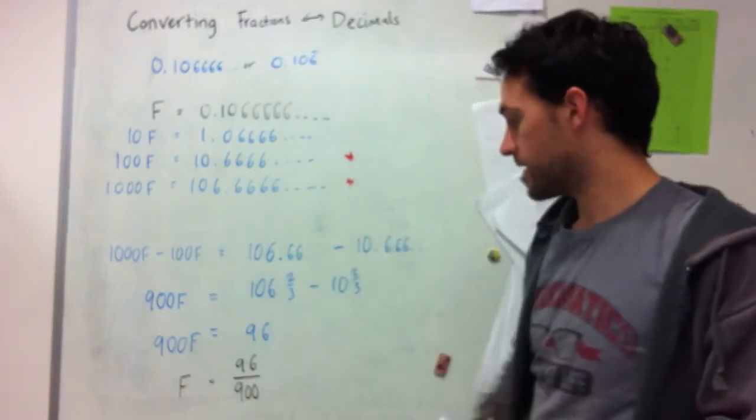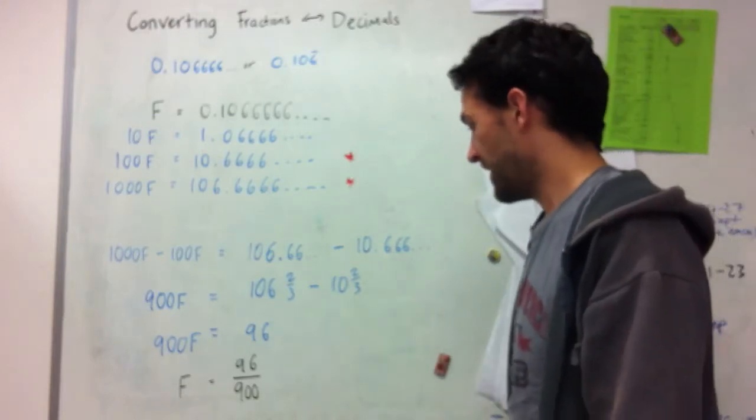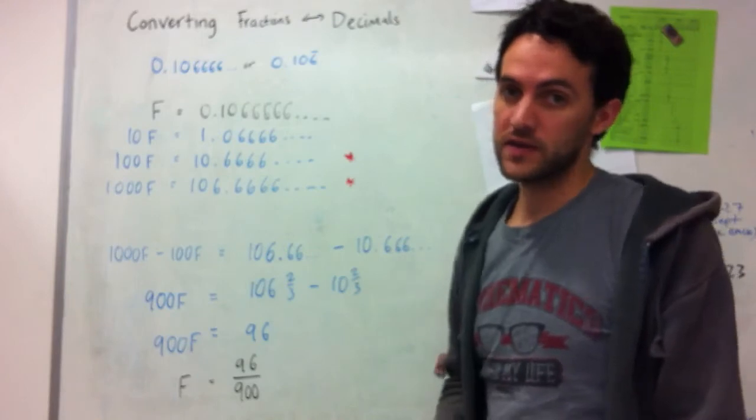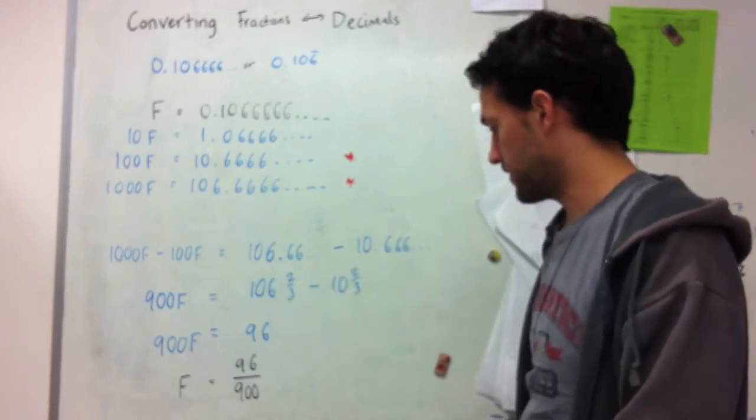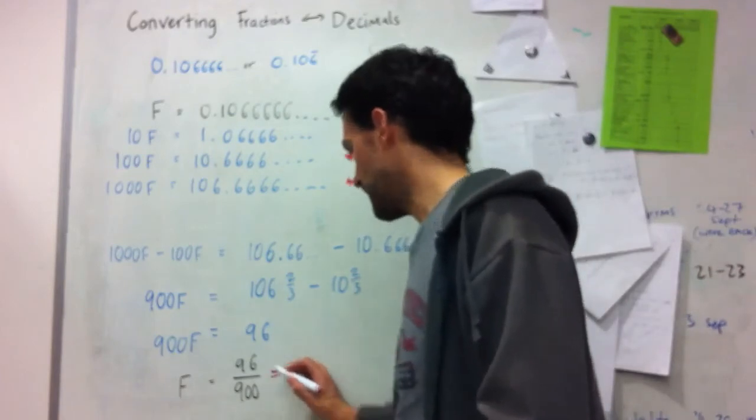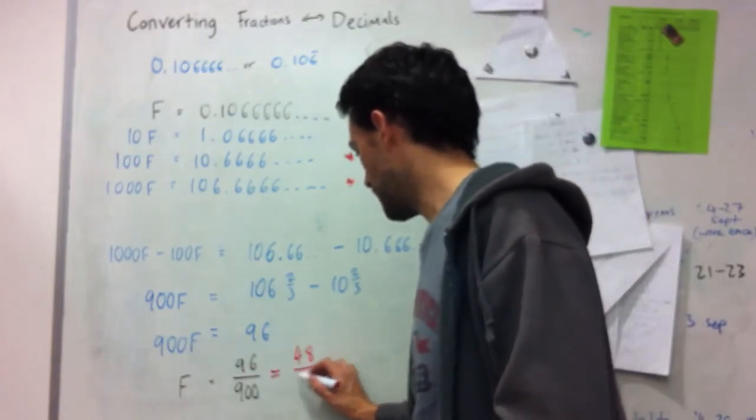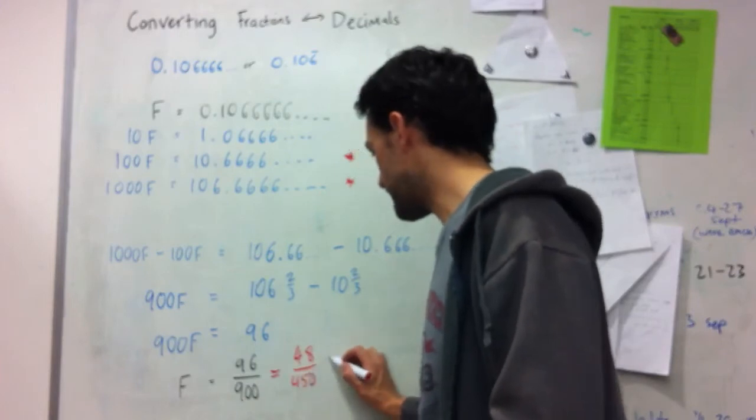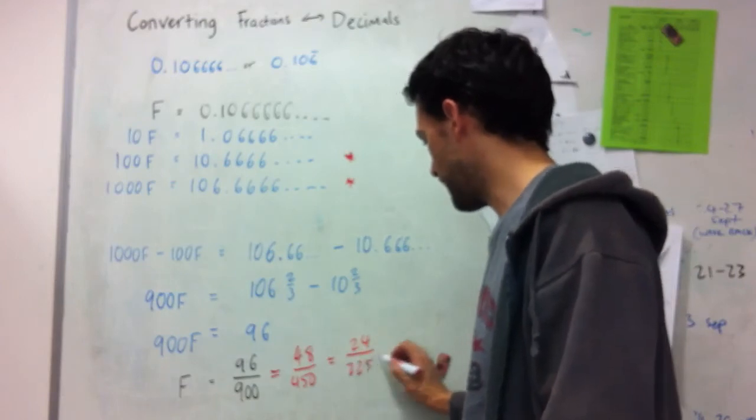And then my last step is just to simplify this fraction. So I can look at it here. One of the methods that we can do is just keep on taking smaller and smaller factors out. So if I do it that way, then I get 96 over 900 equals 48 over 450. They're both still even numbers. So I can have 24 over 225.